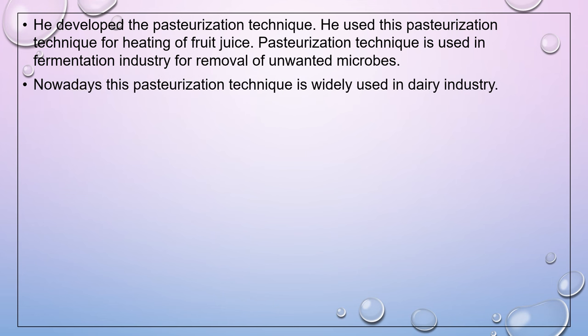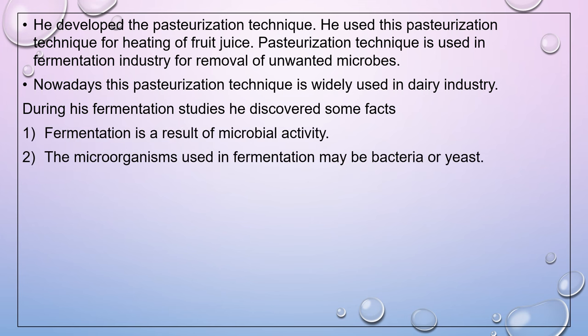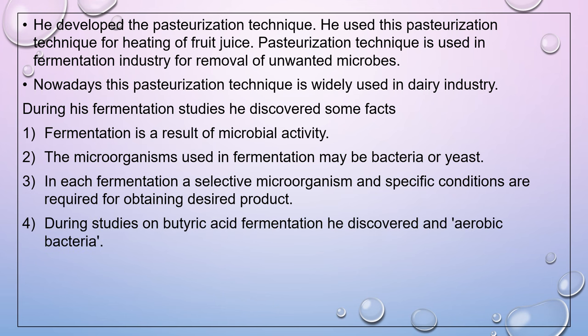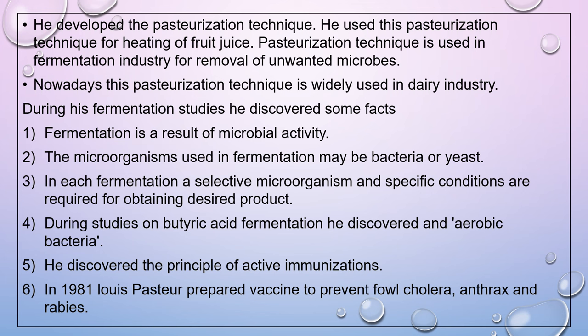During his fermentation studies, Pasteur discovered that fermentation is a result of microbial activity, and the microorganism used may be bacteria or yeast. In each fermentation, a selective microorganism and specific conditions are required for the desired product. During studies on butyric acid fermentation, he discovered an anaerobic bacteria. He also discovered the principle of active immunization, and in 1881, Louis Pasteur prepared vaccines to prevent fowl cholera, anthrax and rabies.